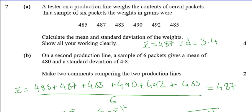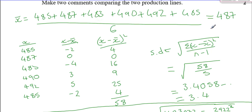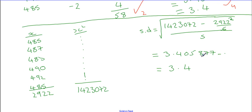Marks for part A: one mark for the mean, one mark for getting the total, one mark for substituting in, and one mark for calculating. Alternative method: one mark still for the mean, second mark for your two totals, third mark for substituting, and fourth mark for calculating.